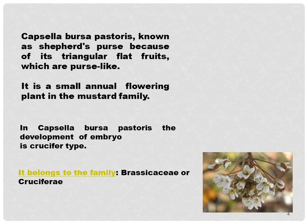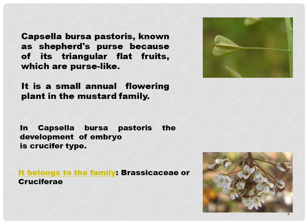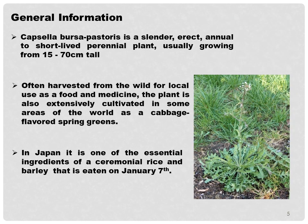It belongs to the family Brassicaceae or Cruciferae. In the image you can see the purse-like flat triangular fruit of this plant — that is why it is known as the shepherd's purse. This plant is a cylindrical erect annual to short-lived perennial plant, usually growing from 15 to 70 centimeters tall. It is harvested from the wild for local use as food and medicine, and also cultivated in some areas of the world as a cabbage-flavored spring green. In Japan it is one of the essential ingredients of a ceremonial rice and barley dish eaten on January 7th.